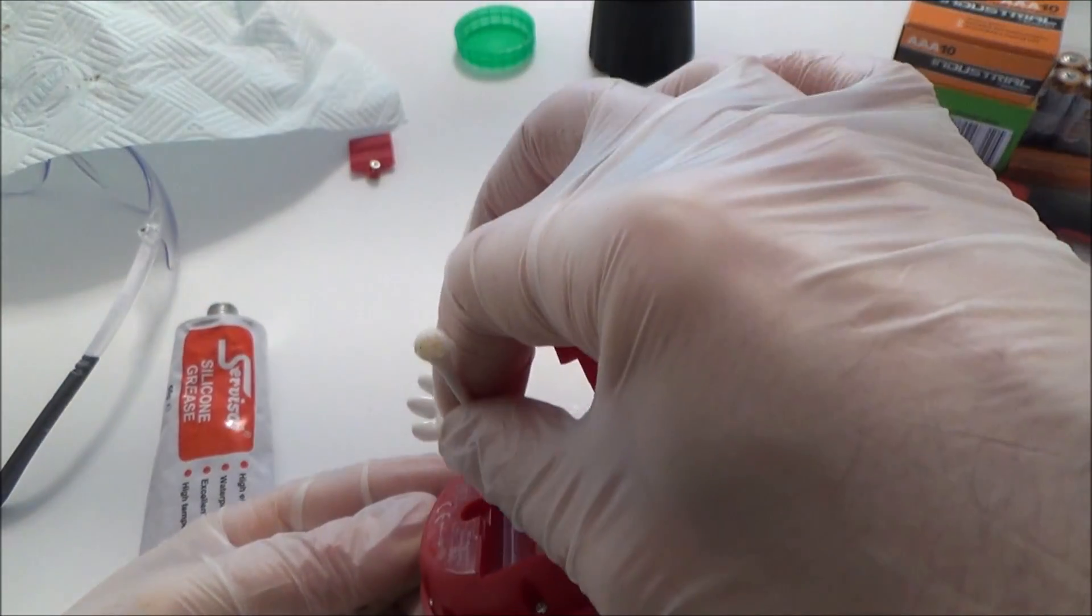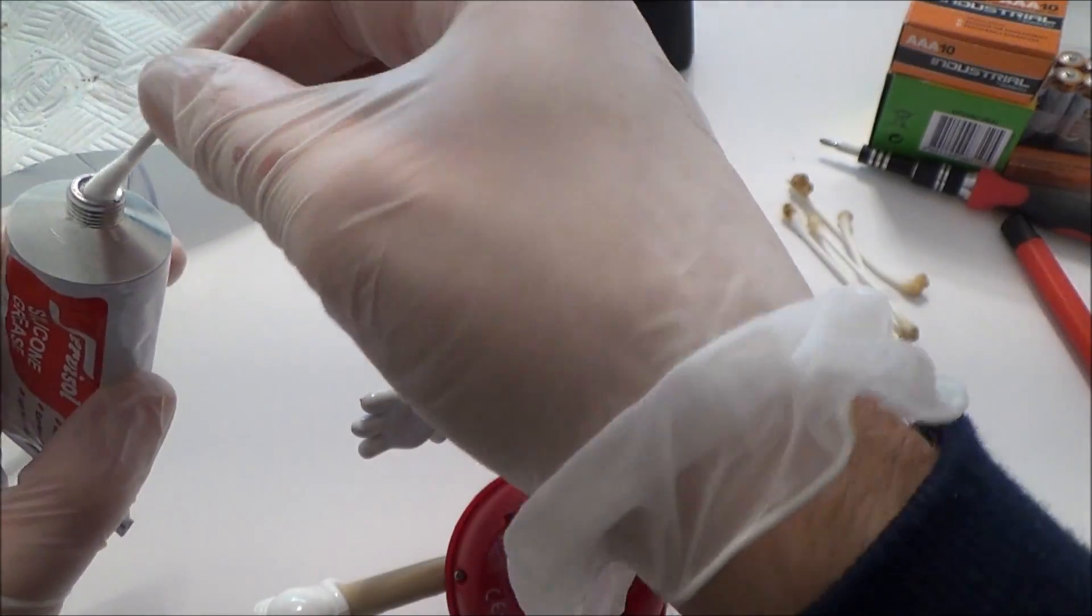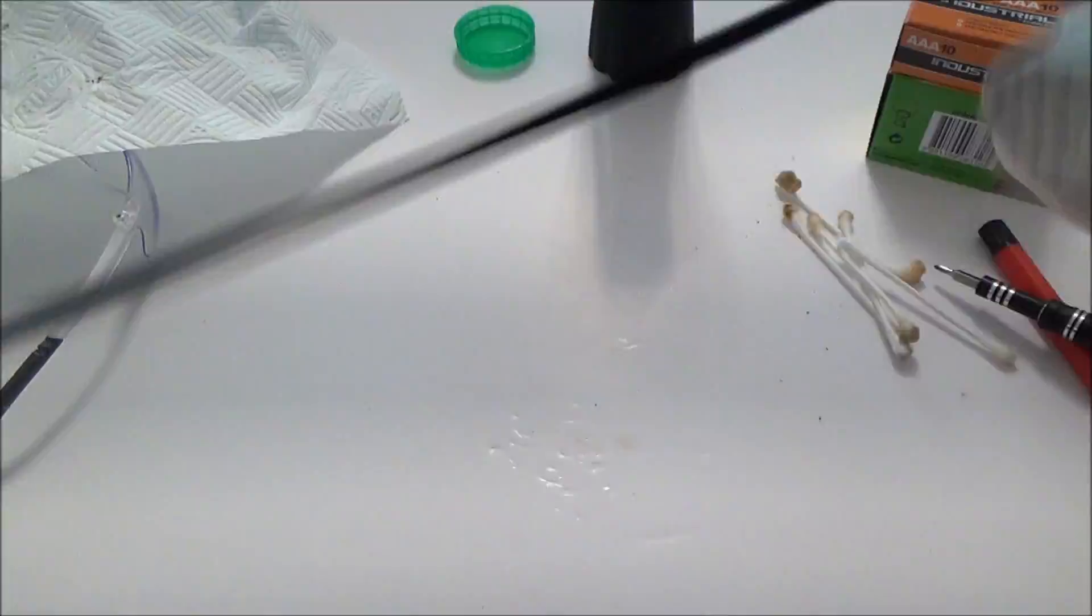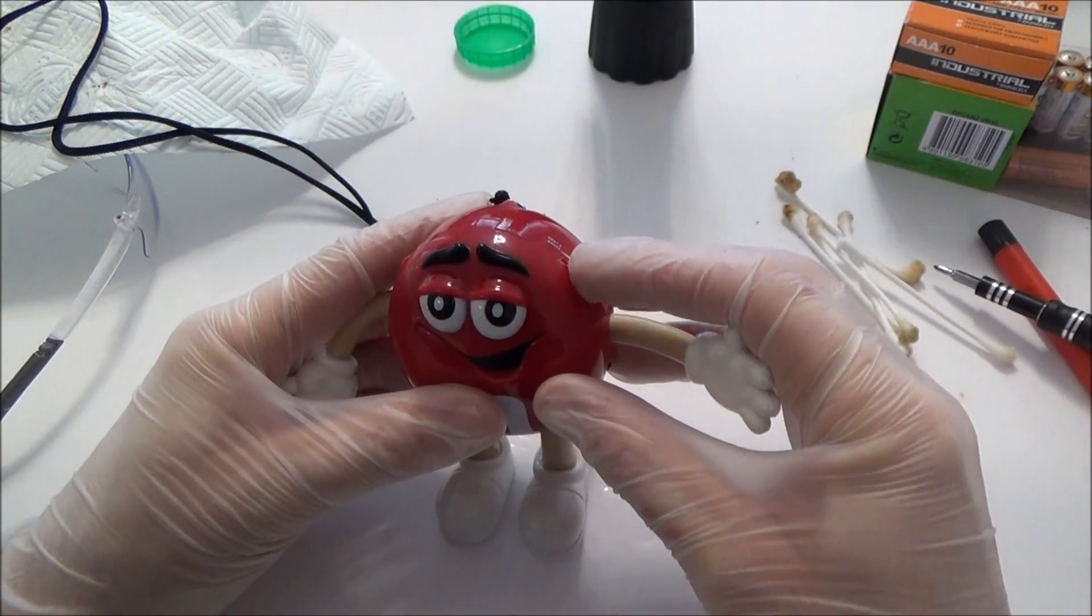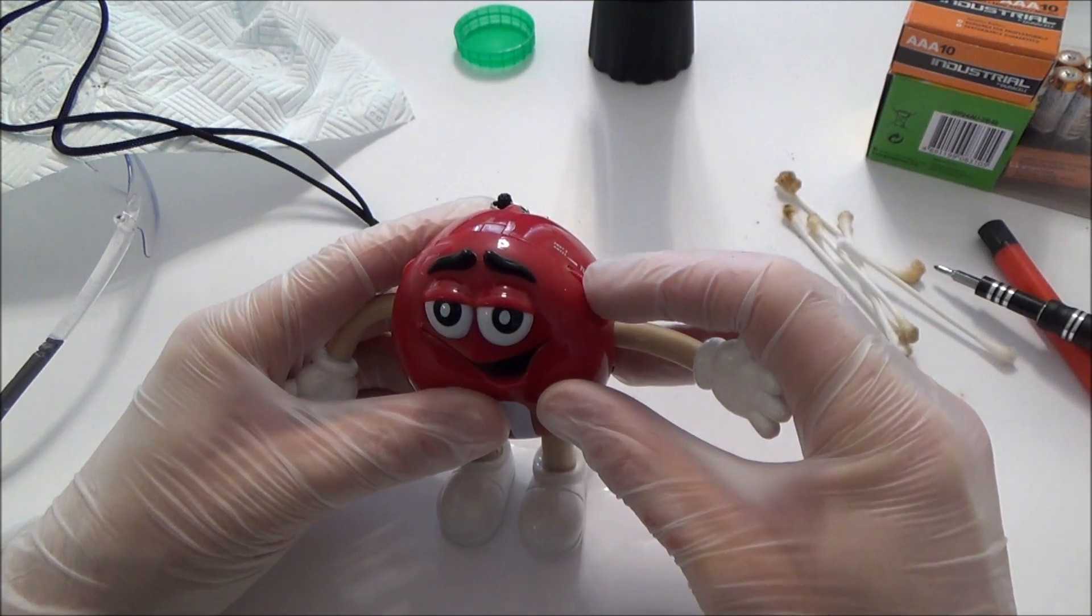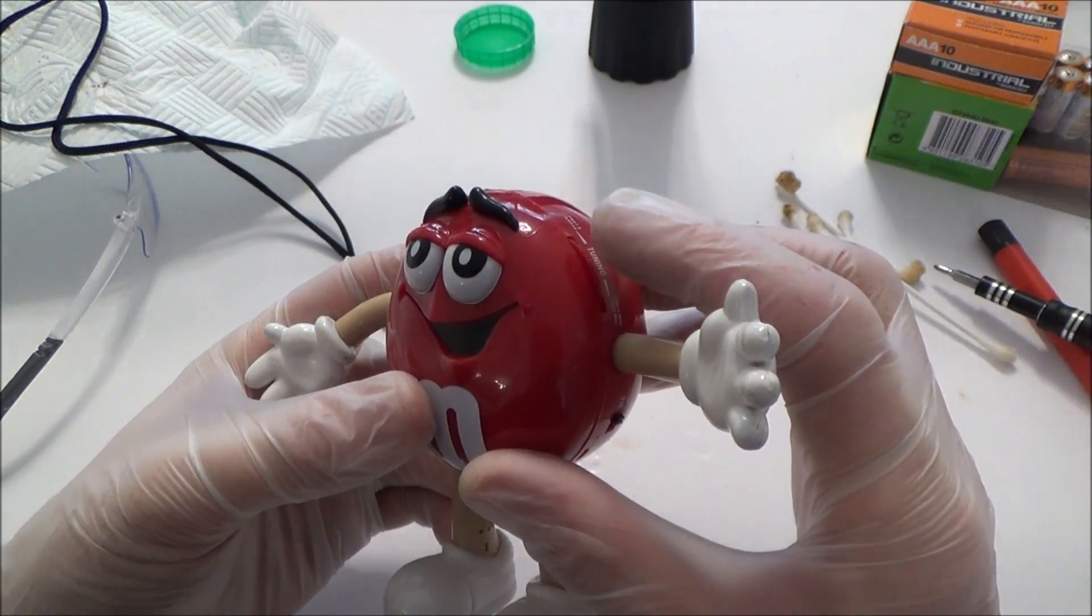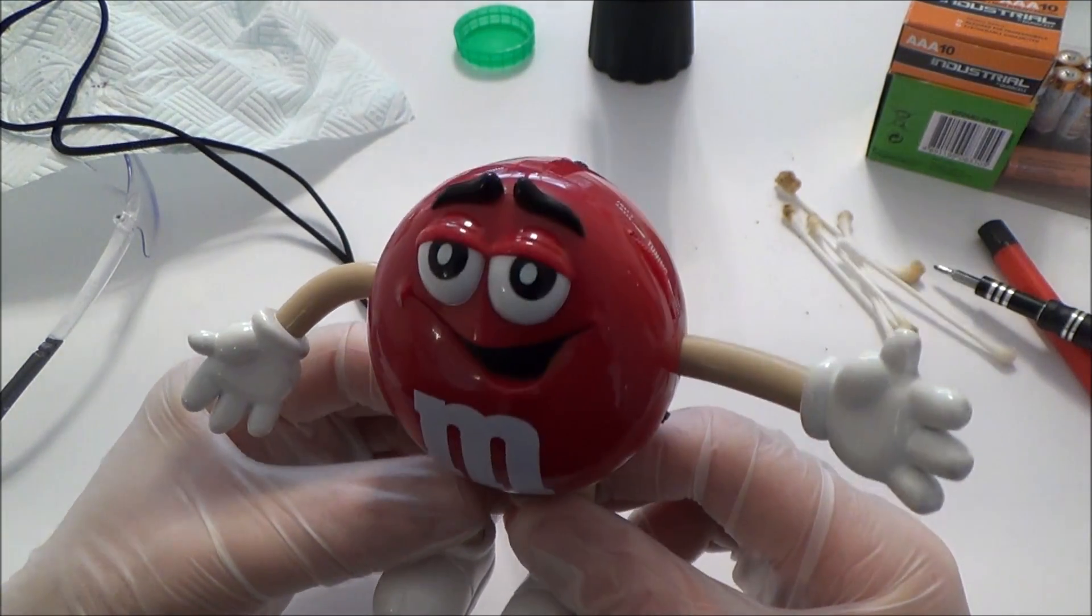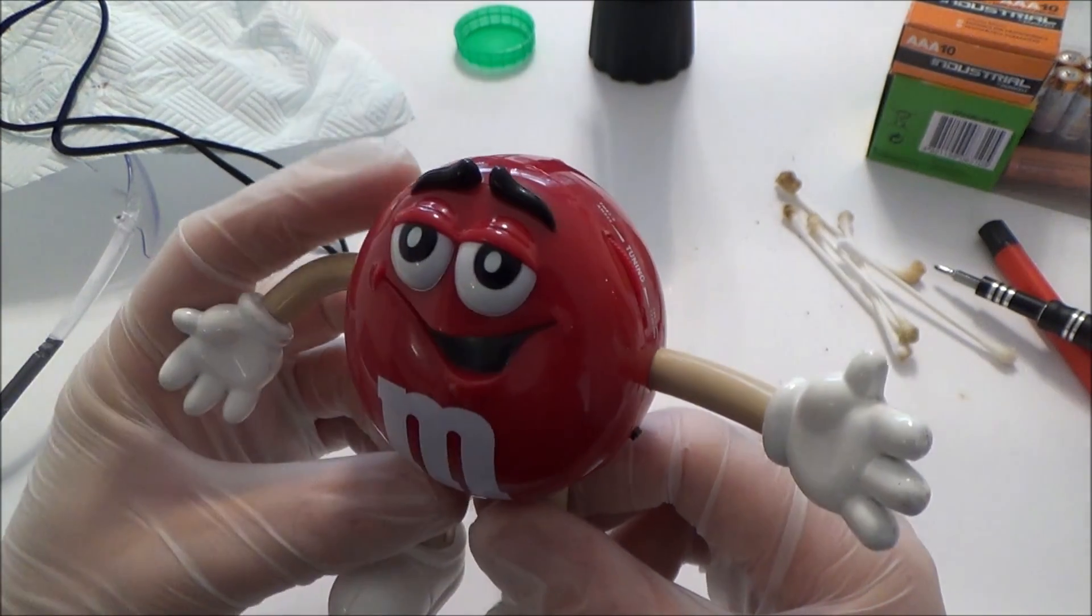I'm not going to put it on any of the others because they've still got their plating on there. It's just that this one which is completely gone, so this will just give a little bit of protection. And there we go, you can see now the red M&M is now working.